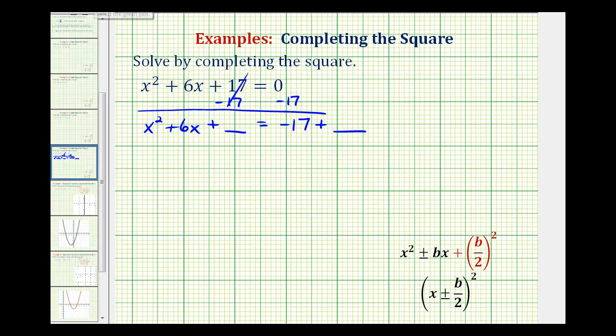Now the next step is to determine the constant that we're going to add here so this will be a perfect square trinomial. So let's review these notes down here at the bottom. If we have a perfect square trinomial with a leading coefficient of 1, then the constant term is going to be b divided by 2 squared.